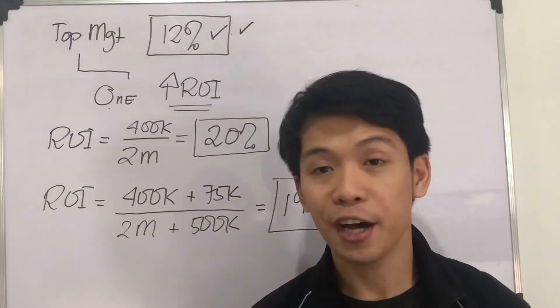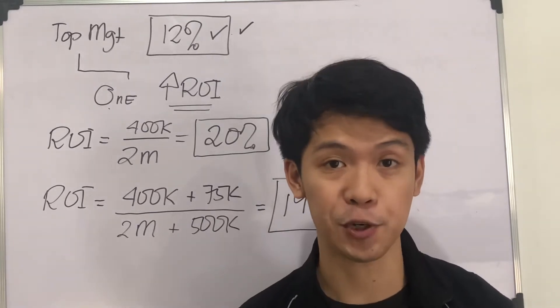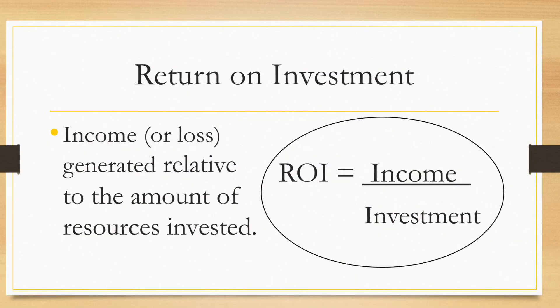we have ROI and RI as a performance measure. ROI is the income or loss generated relative to the amount of investment, that is income over investment.